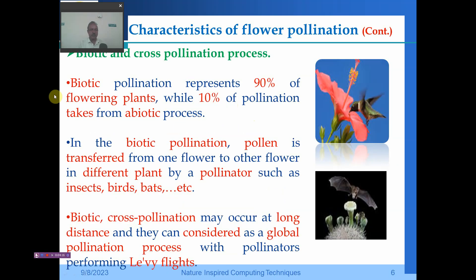Biotic pollination represents 90% of the flowering plants, while 10% of pollination takes place from abiotic. That means cross pollination is responsible for 90%. In biotic or cross pollination, pollen is transferred from one flower to a flower on a different plant by a pollinator such as insect, bird, bat, or bee. This may occur over a long distance and is considered a global pollination process, with pollinators performing the Lévy flight.